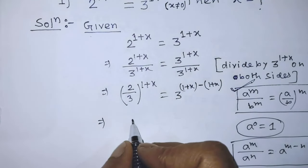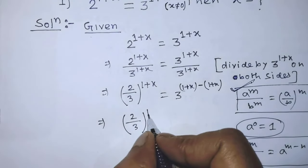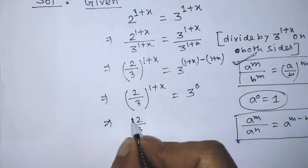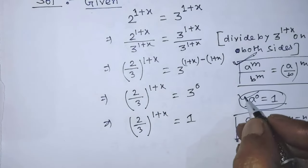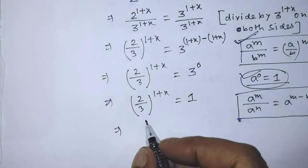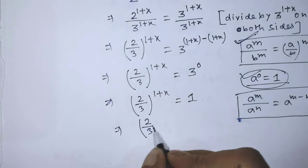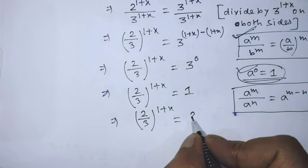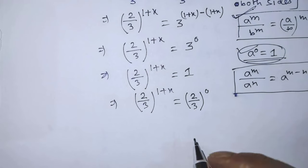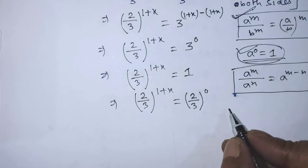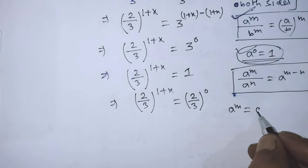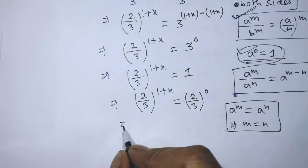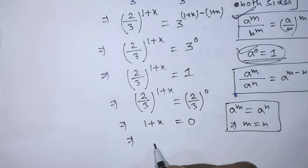From this equation we can write 2 over 3 whole to the power 1 plus x is equal to 3 to the power 0. On the left hand side again we have 2 over 3 whole to the power 1 plus x is equal to 1, which we can write as 2 over 3 whole to the power 0. To find the value of x, we apply the formula: a to the power m equals a to the power n implies m equals n. According to this formula, 1 plus x is equal to 0.